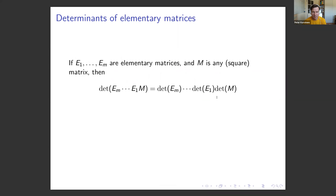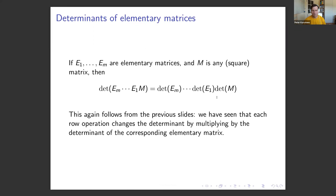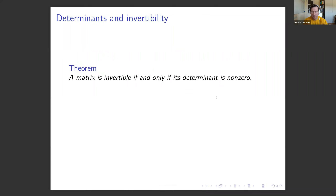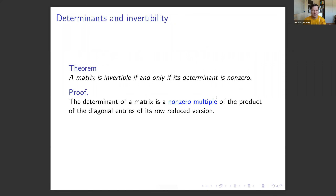Each row operation changes the determinant by multiplying it by the determinant of the corresponding elementary matrix. A key theorem: a matrix is invertible if and only if its determinant is non-zero. Proof: the determinant of a matrix is a non-zero multiple of the product of the diagonal entries of its row-reduced version. Based on what we know about invertibility, the matrix is invertible if and only if the pivots run down the diagonal — one pivot in each row and column.